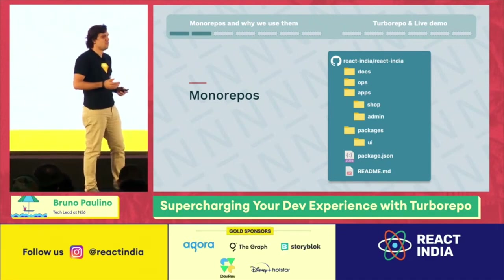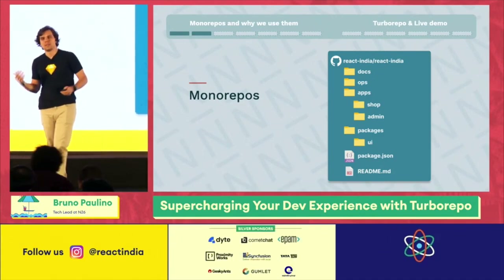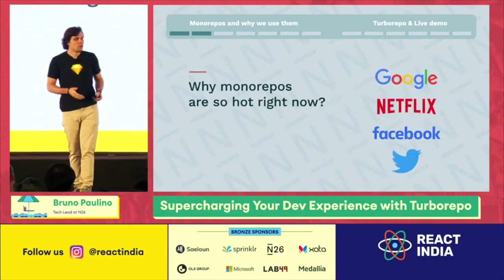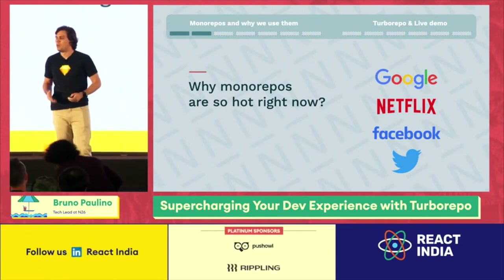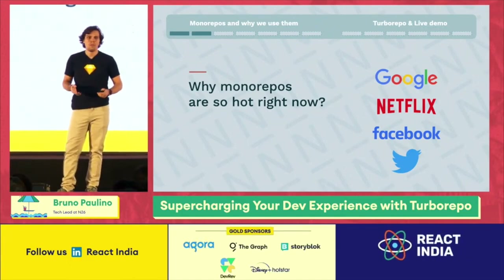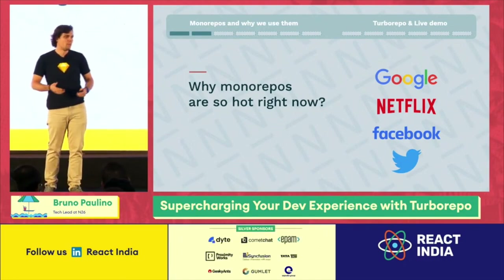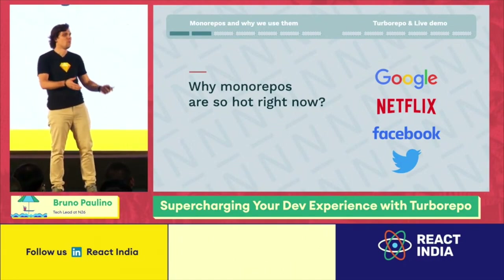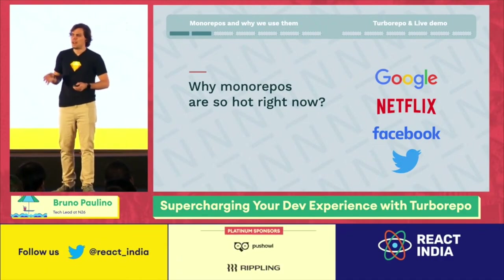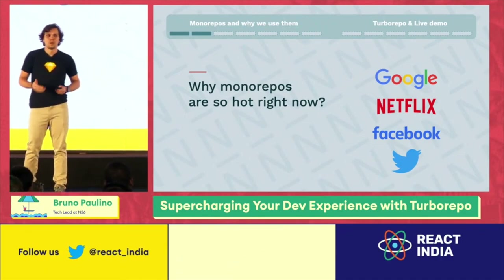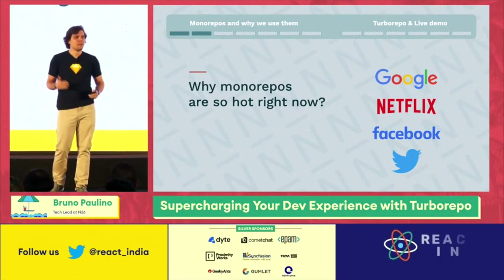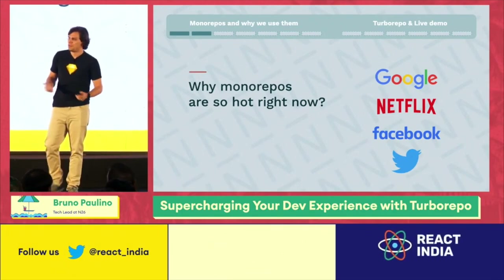You might ask yourself: companies are using multiple repositories because they want autonomy and independence, so why are monorepos so hot right now? Why are big companies using monorepos? We see Google, Netflix, Facebook, and Twitter all using monorepos in some shape or form. Google created a tool called Bazel, which is open source — basically a tool to help you manage monorepos. Facebook and Twitter did the same thing. But those tools are really focused on C++ and Java, so they're not very friendly with JavaScript and TypeScript repositories.